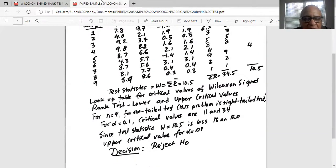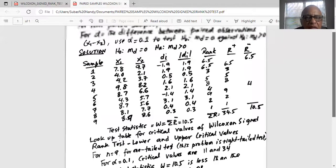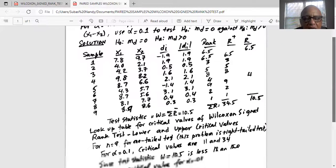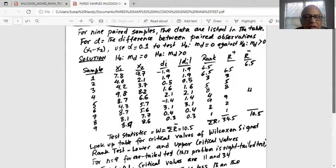And our test statistic is less than the upper critical value. Decision is reject the null hypothesis. So that means that at alpha equal to 0.1, there is enough evidence to support the alternate that the median difference is greater than zero.